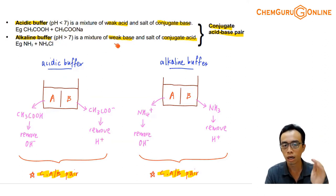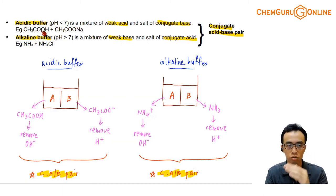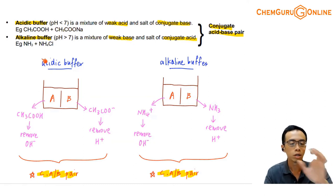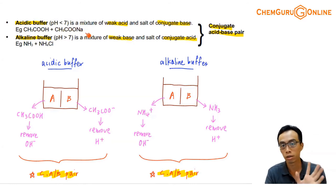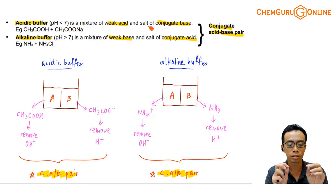Similarly, an alkaline buffer is a mixture of a weak base and its conjugate acid. The salt is not so important — the conjugate acid is more important. For example, in an acidic buffer with CH₃COOH and CH₃COO⁻Na⁺: which component gives the buffer its pH-maintaining property? It has nothing to do with Na⁺, because Na⁺ is neutral. The component making the buffer maintain pH is CH₃COO⁻, not Na⁺. So focus on the conjugate base — it is not so much the salt CH₃COO⁻Na⁺, but rather CH₃COO⁻ itself.